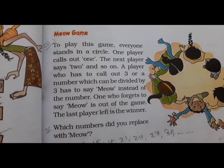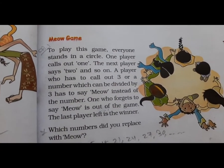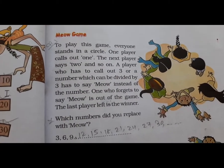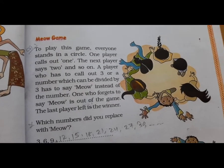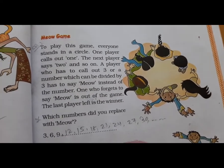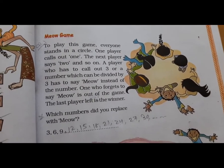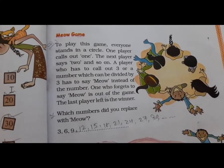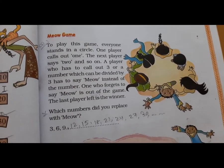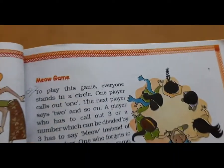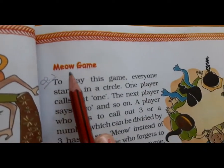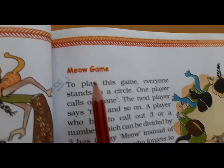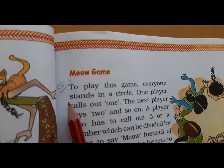Hello students. Standard 5, Subject Maths, Chapter 6. Open your textbook, page number 89, and open your notebook. Write the heading in your notebook: Meow Game.